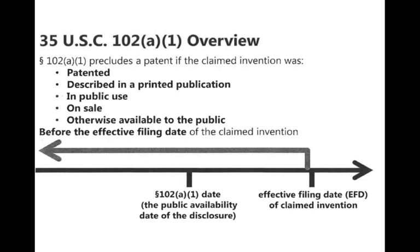USC 102 A1 says: the claimed invention was patented, described in a printed publication, or in public use, on sale, or otherwise available to the public before the effective filing date of the claimed invention. If that's true, then you can't keep the patent. There's your effective filing date — that's when you file it with the office. And 102 A1 says any of this stuff that happened before that date can knock you out. It could be patented, described in a printed publication, or in public use.